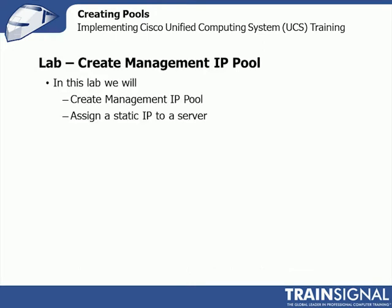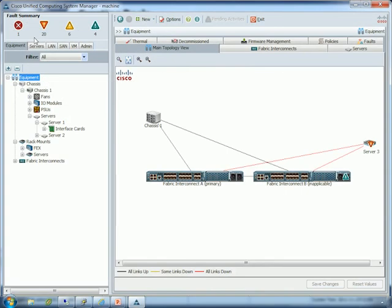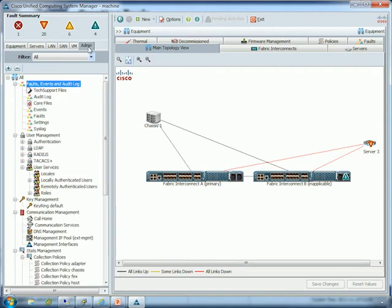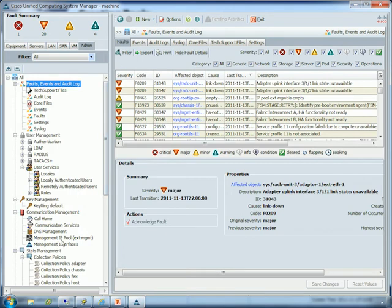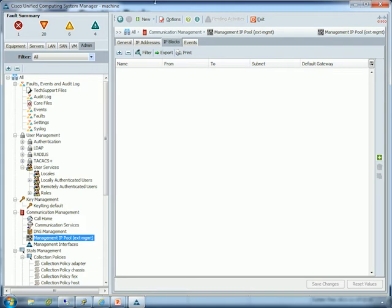Let's jump to the lab. We're going to do two things: create a management IP pool, and then if you wanted to statically assign an IP to a server or service profile, I'll quickly show you how. We're going to be using the UCS Platform Emulator for this — it's a great way to see this. Here we are in the UCS Platform Emulator. To create your management IP pool, go to the Admin tab and scroll down until you see Management IP Pool — IP Pool, External Management.